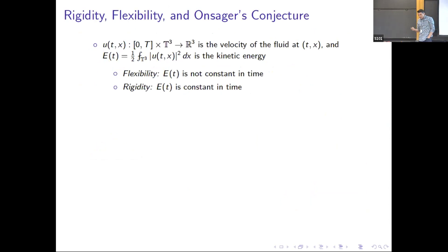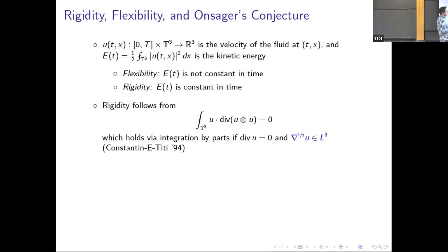What does such a threshold problem look like in the context of the Euler equations? I have my fluid velocity u on the three-dimensional torus and I have the kinetic energy. For me flexibility means non-conservation of the kinetic energy and rigidity means conservation. If one writes down the Euler equations it turns out that rigidity is basically a byproduct of this particular integral identity. For divergence-free vector fields with bounded gradients this is just an exercise to show that this is zero and that implies rigidity. But it's actually a theorem that if u has one-third of a derivative in L^3 then this integral identity holds.